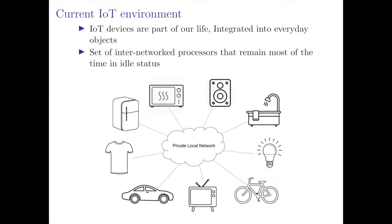The base of this work is that all those devices with computational resources remain most of the time in an idle state. The best example for that is smart lighting, which is just a traditional light bulb with a processor and a Wi-Fi antenna. Those resources are only used when the user decides to send a command from his app to turn it on or turn it off, and the rest of the time these resources are idle.